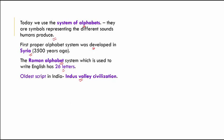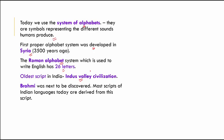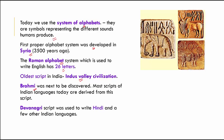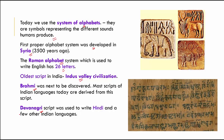Brahmi was the next script discovered after the Indus Valley script. Most scripts of Indian languages today seem to have been derived from the Brahmi script. Then we have the Devanagari script — the most common and popular script in India. Hindi and a few other Indian languages were derived from the Devanagari script, and if you look at it, it looks very similar to Hindi.